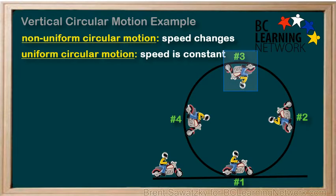If you picked position number three, you'd be right. The rider would have the maximum potential energy at the top of the loop. Potential energy equals mgh and the height is a maximum at the top.